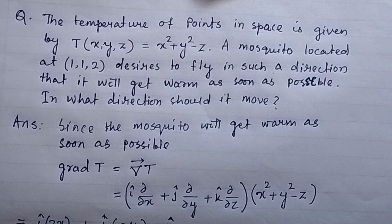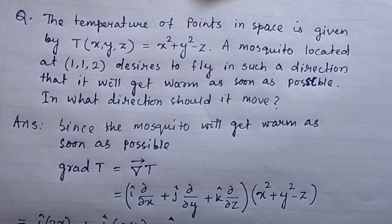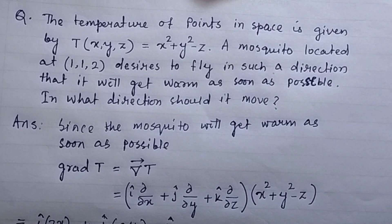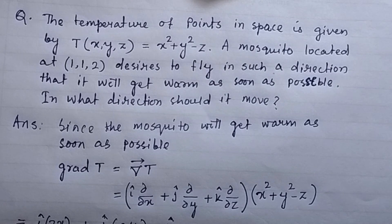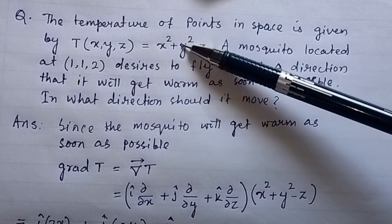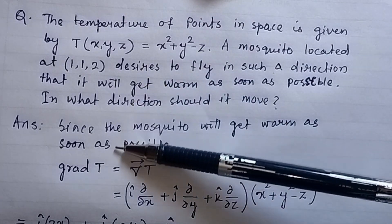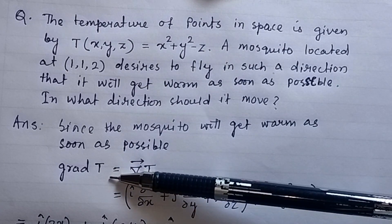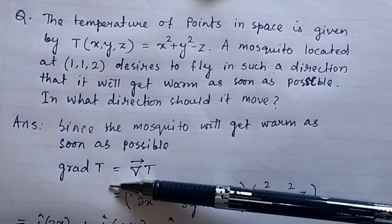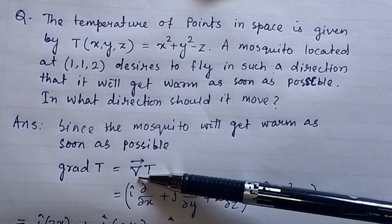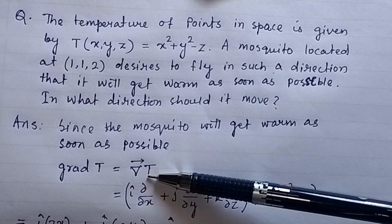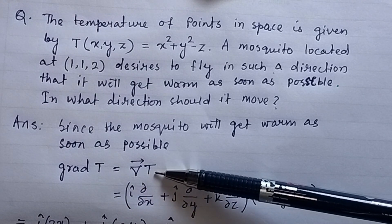Since in the question it is given that the mosquito will get warm as soon as possible, we have to find out the gradient of the change in temperature. And the gradient of the temperature T is equal to del of T.